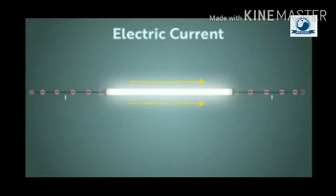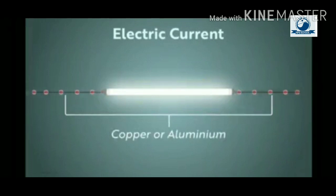This unidirectional motion of electrons in a wire is also called electric current.